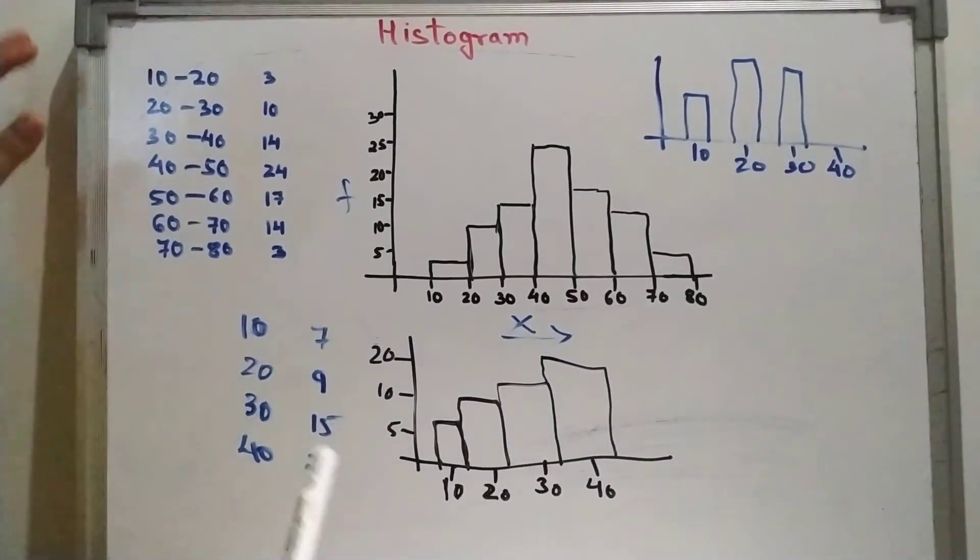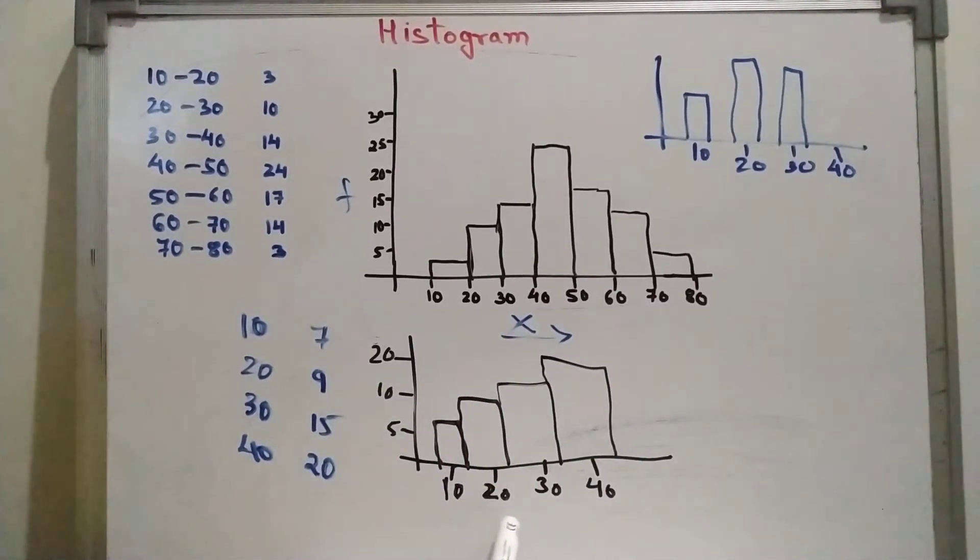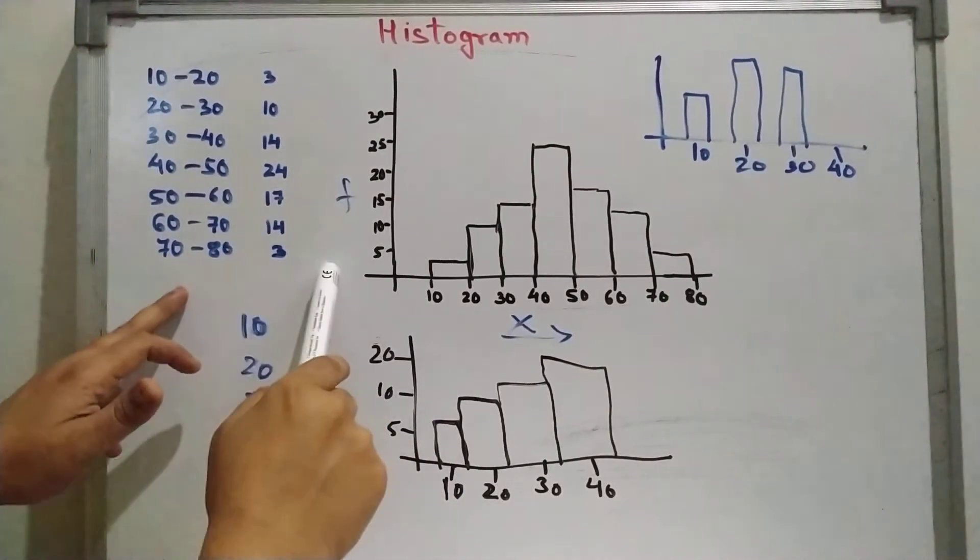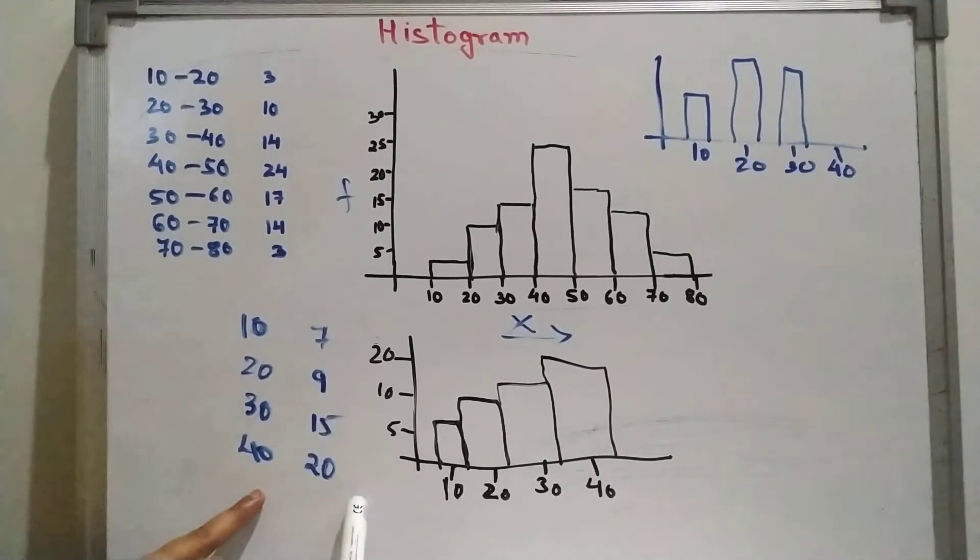Now this is a histogram for discrete data. Generally we plot histogram for continuous frequency distribution. But for discrete distribution, discrete frequency distribution also we can plot this histogram. But in that case, we have to take these values as a mid value.